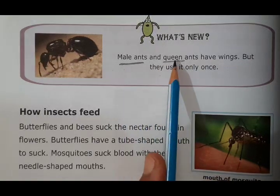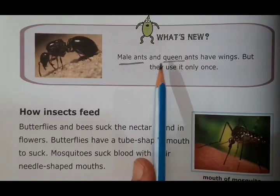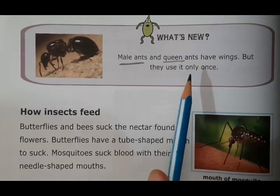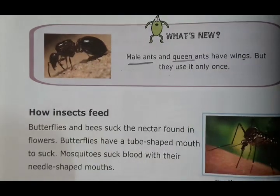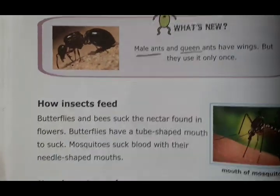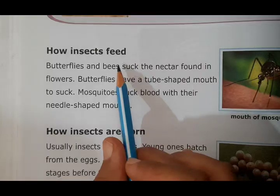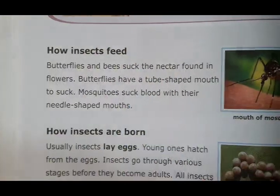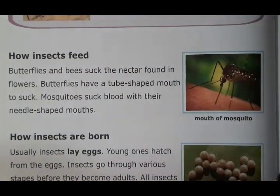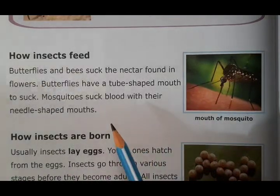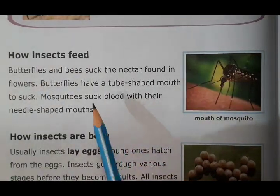Male ants and queen ants have wings and they can use these wings only once. Now, how do insects feed? We are going to learn about the feeding habits of insects — how they eat.